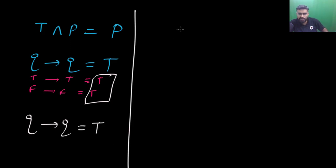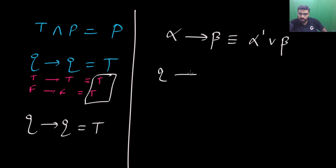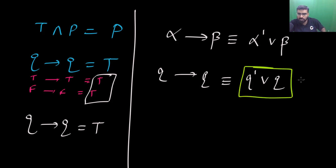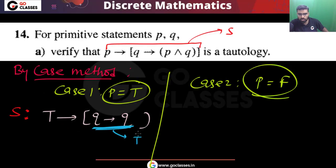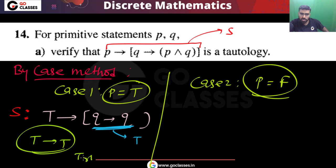We can also verify using the equivalence: alpha implies beta equals ¬alpha ∨ beta. So Q implies Q becomes ¬Q ∨ Q, which is always true. Therefore true implies true is true, so S is true in case 1.